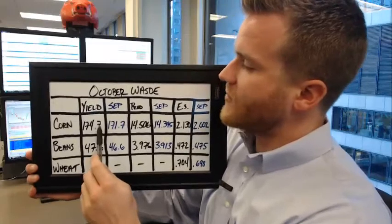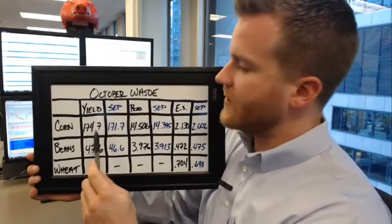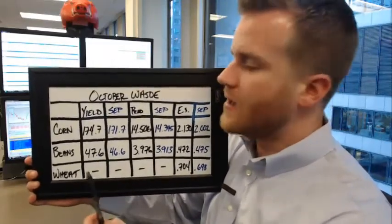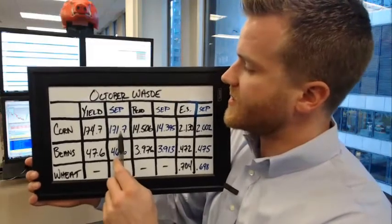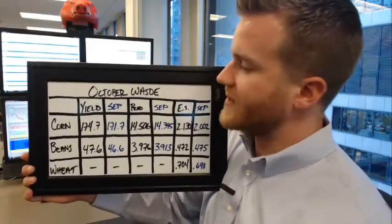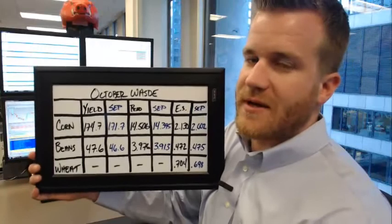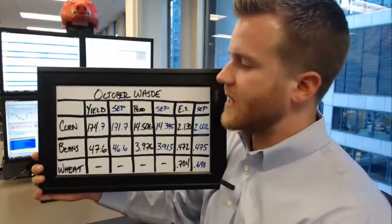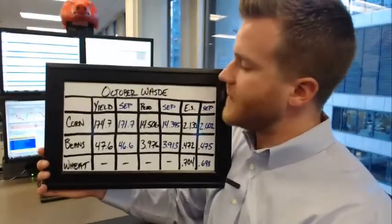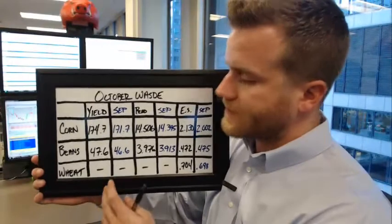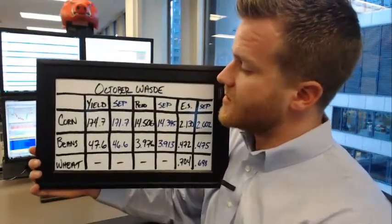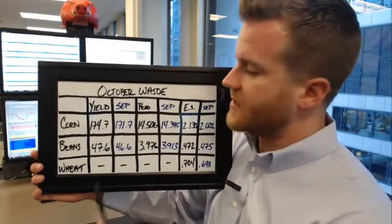The corn average trade estimate for yields comes in at 174.7 bushels per acre, versus a September estimate of 171.7. That's not much of a surprise if you've been watching, as we've been talking about how impressive yields have been. The USDA has had a month to see those come through, so we should see that adjusted in the report.